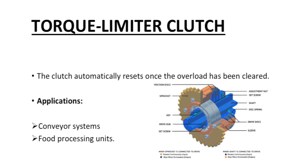Torque limiter clutch: the clutch automatically resets once the overload has been cleared. Applications: used on conveyor systems and food processing units.